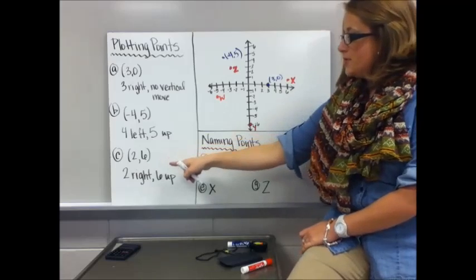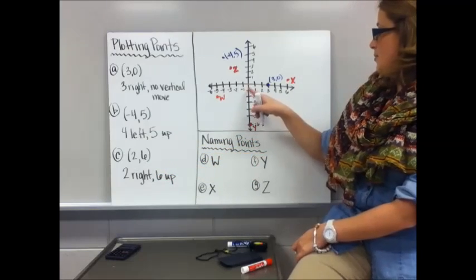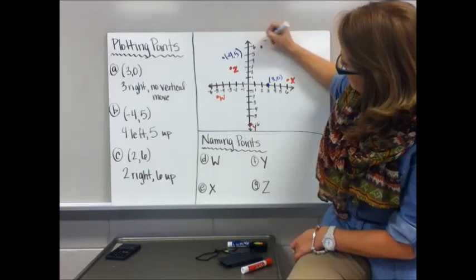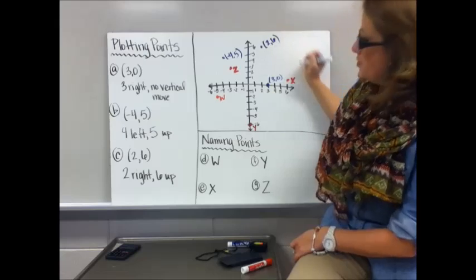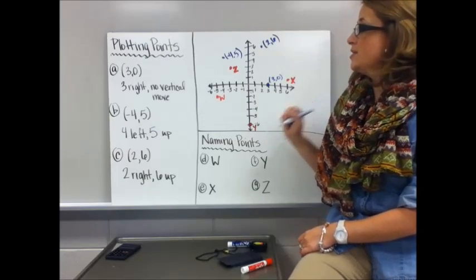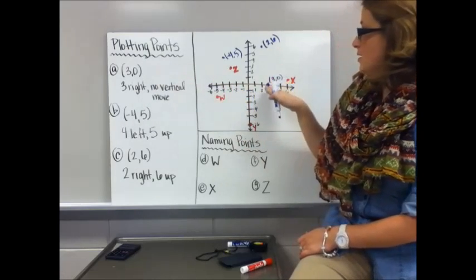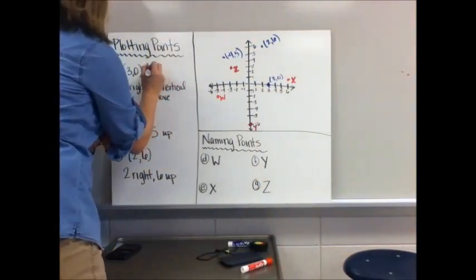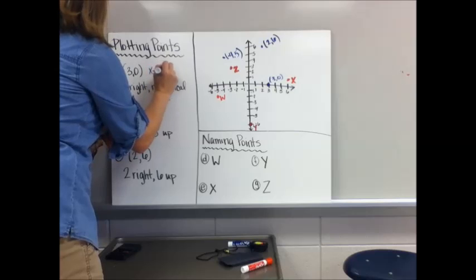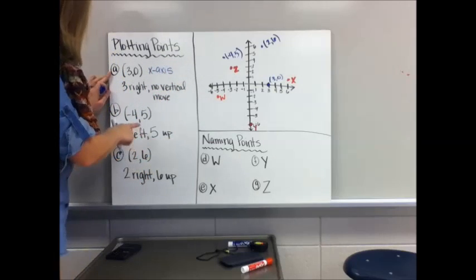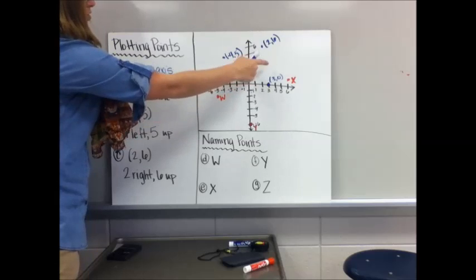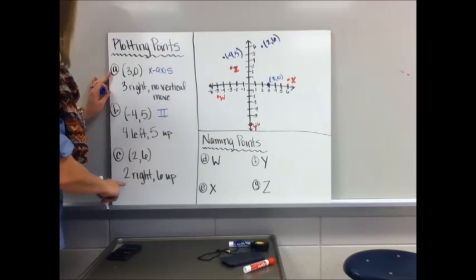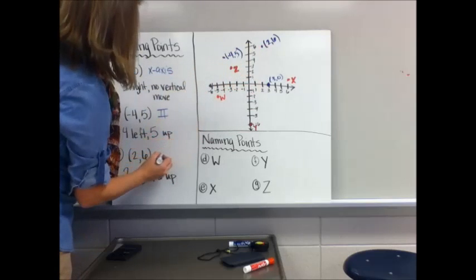For C, two, six. You're going to go two right and six up. Over two, up one, two, three, four, five, six. Two, six. And let's go ahead and name the quadrants that these are in. Point A, it's not in a quadrant, so how you would label it is you would say it's on the x-axis. For point B, negative four, five, that is in quadrant two. And for point C, two, six, that is in quadrant one.